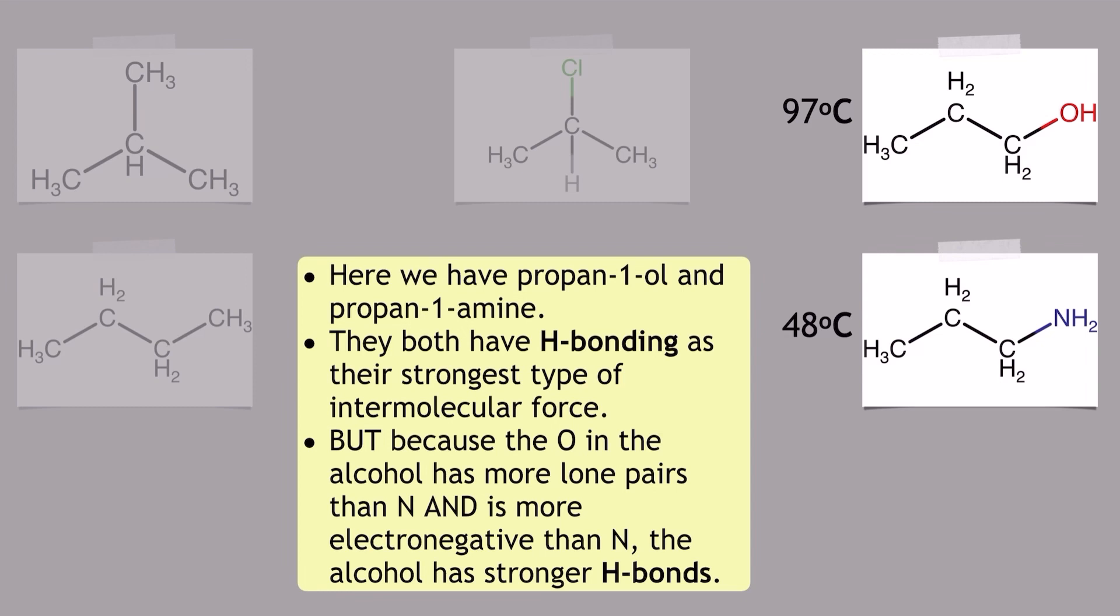Now they've both got hydrogen bonding as their strongest type of intermolecular force, hence why they've got the largest boiling point values from the selection I've chosen. But you'll notice that the alcohol, the propan-1-ol, has actually got a higher boiling point than the amine, the propan-1-amine.